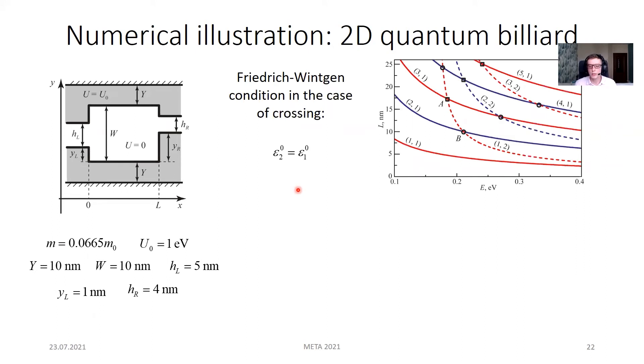Eigenmode energies of the isolated billiard can become degenerate. Thus, the standard Friedrich-Wintgen condition turns into requirement of degeneracy. The plot shows the dependence of some eigenmode energies of the resonator on its length. The plot shows degeneracy corresponds to the intersection of these lines. For certainty, we focus on point A and point B.